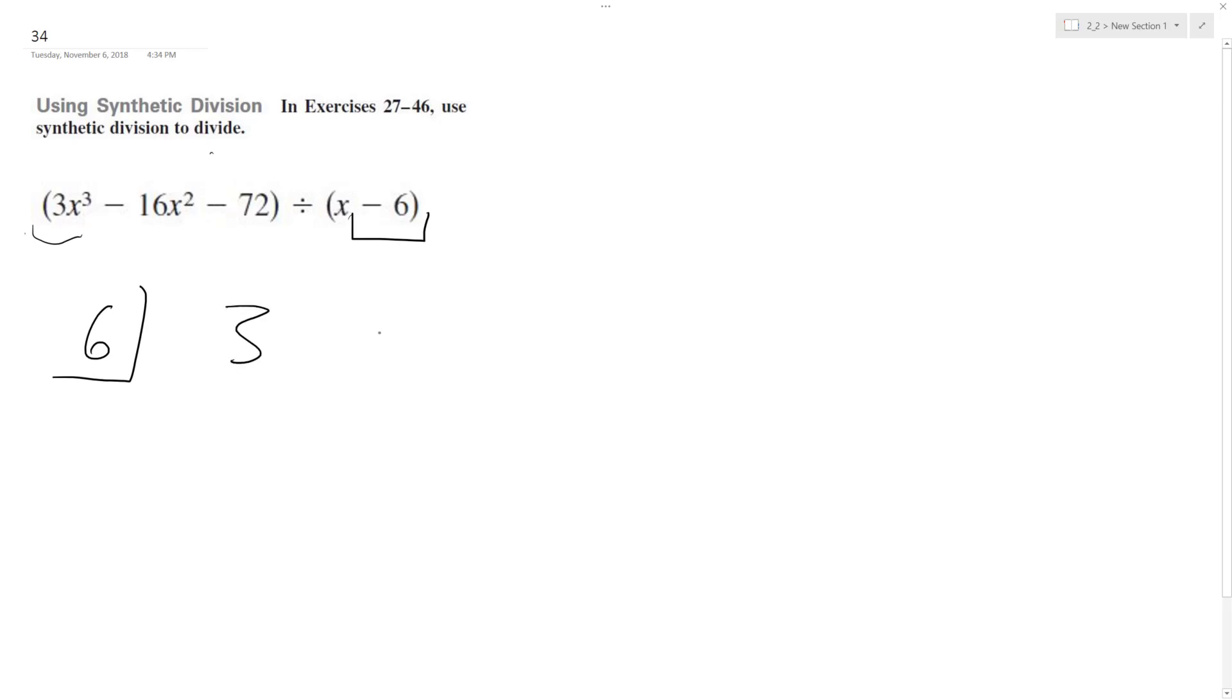So we're going to have 3, negative 16, and then 0 because there's no just linear x term, and then negative 72. All right, so using these terms, pulling this down, I'm going to have 3.